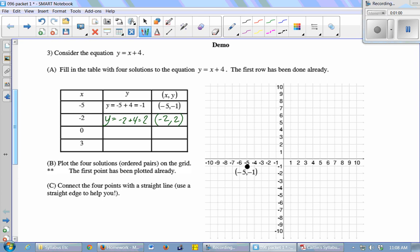And then we do the same thing for 0. y equals, replace the x in the equation with a 0, and you get 4. So my ordered pair, x comma y, is 0 comma 4.